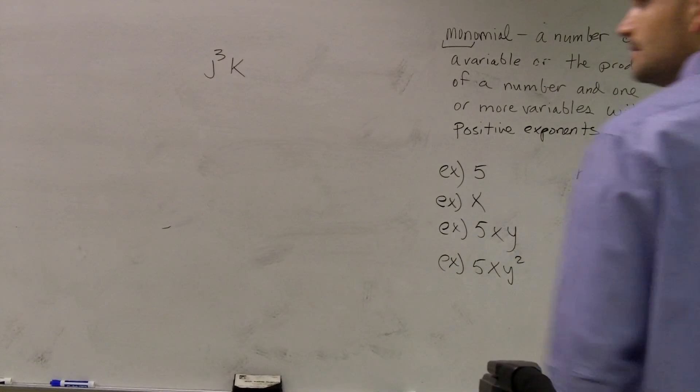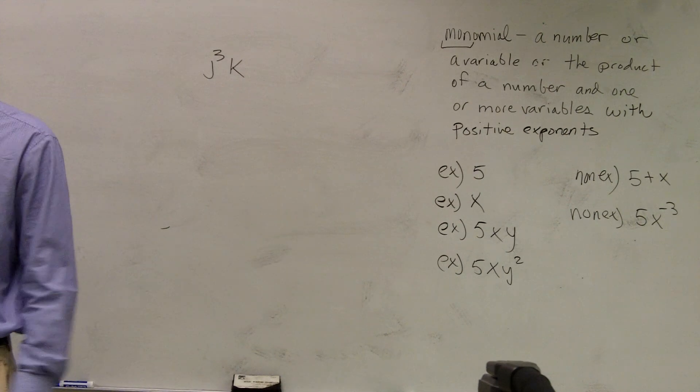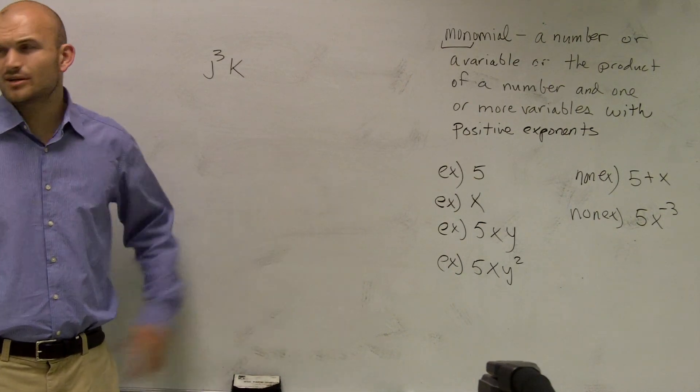It says j cubed, or j raised to the third power multiplied by k. So the next thing I want to look at is, is this going to be a monomial?